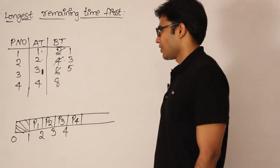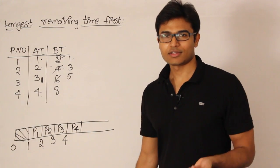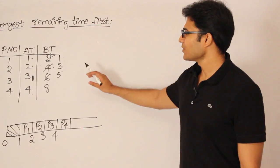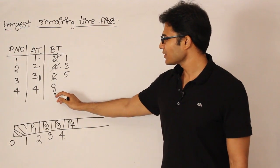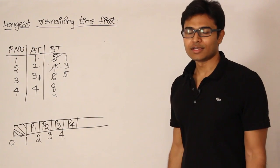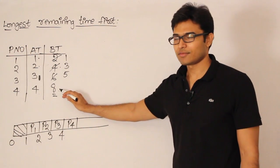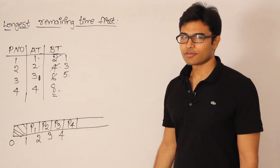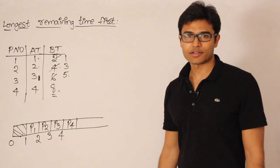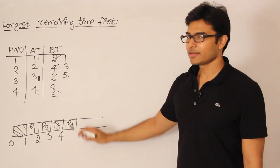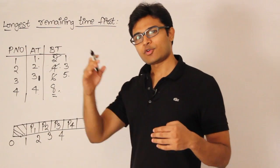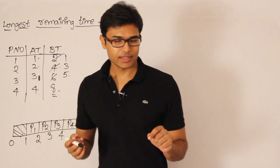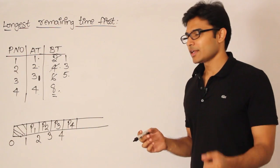Here is the key difference from Shortest Remaining Time First: in SRTF, once all processes have arrived, we could convert to Shortest Job First and finish jobs off. But in LRTF, you cannot do that — you cannot just take the longest job and finish it. The reason is that after executing for some time, another process may become longer. For example, after executing 3 units of P4, P3 will also become 5 and P4 will become 5, so P4 is no longer the longest.